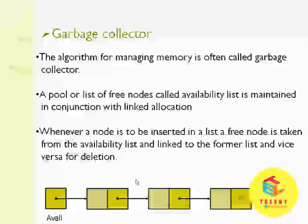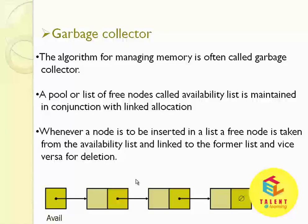Now, let us talk about the garbage collector. The algorithm for managing memory is often called garbage collector. A pool or list of free nodes called availability list is maintained in conjunction with linked allocation. Whenever a node is to be inserted in a list, a free node is taken from the availability list and linked to the former list, and vice versa for deletion. That is, a node is removed from the list and inserted into the free node list. Generally, the availability list is a kind of stack.